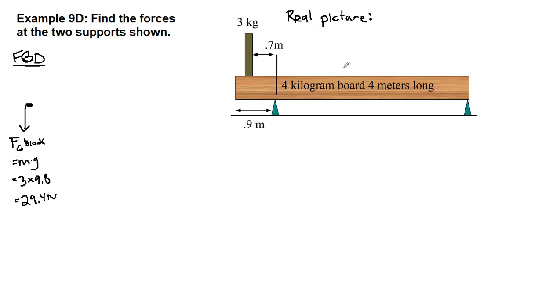We also have the weight of the board itself. This is a board that has a mass of four kilograms, so we want to include that as well. So it's the weight FG of the board. That's also going to be mass times gravity. But in that case, it's four times 9.8 or 39.2 newtons.